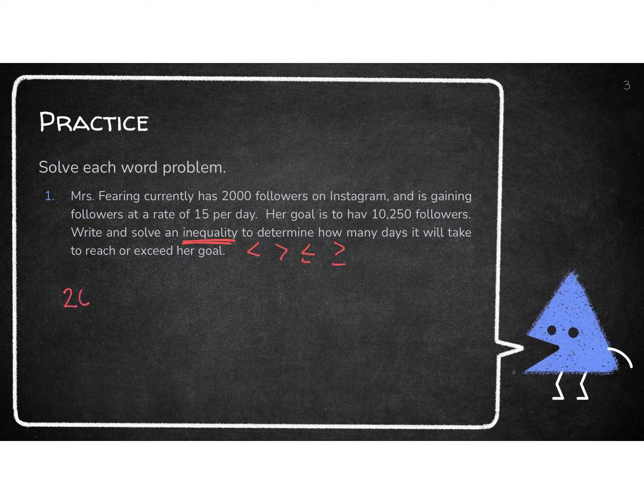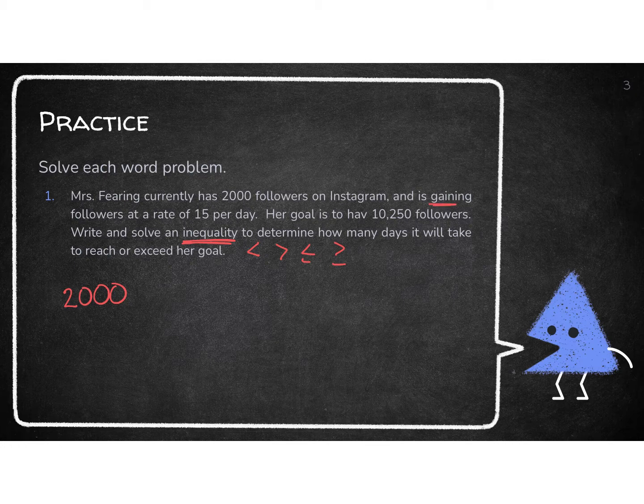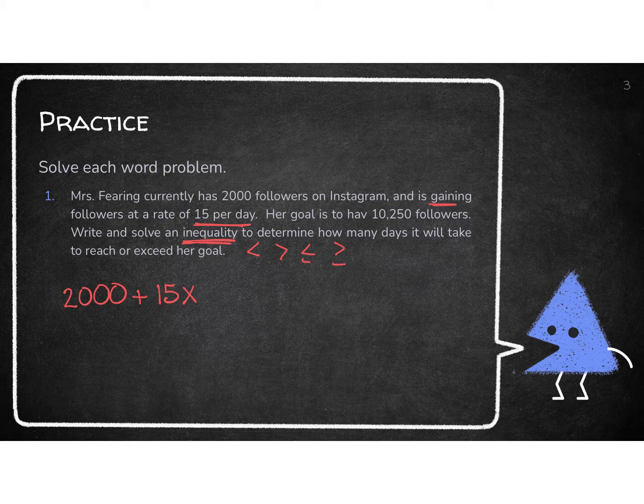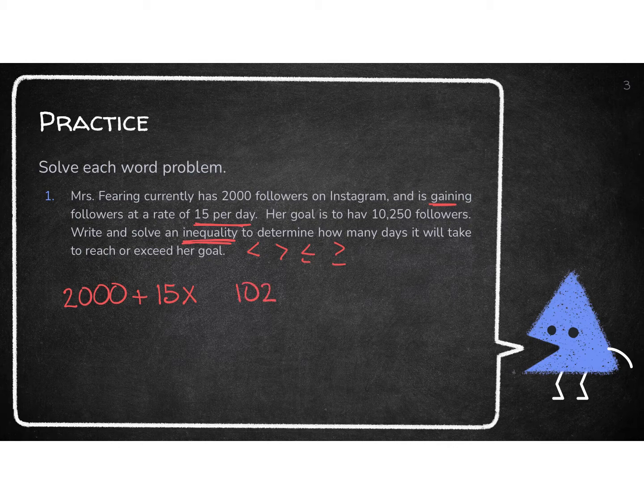Well, I'm starting with 2,000 followers. I'm going to gain. Gaining means I'm going to add 15 followers per day. That per day is what's going to be changing. So that per day tells me that's where my variable is. And then my goal I'm trying to get to is 10,250. So now we need to figure out our symbol that we're going to put here.